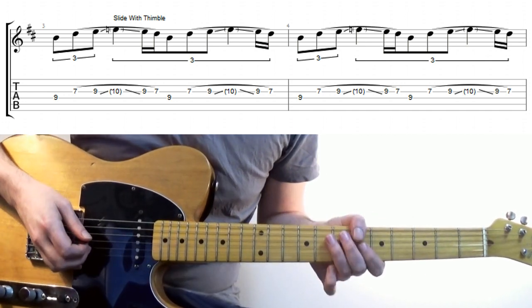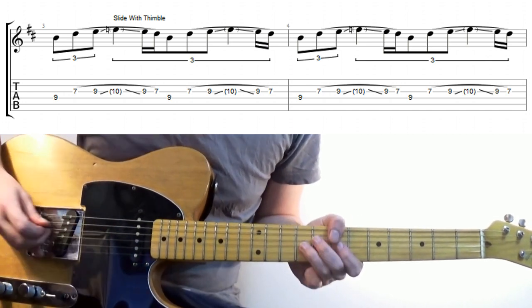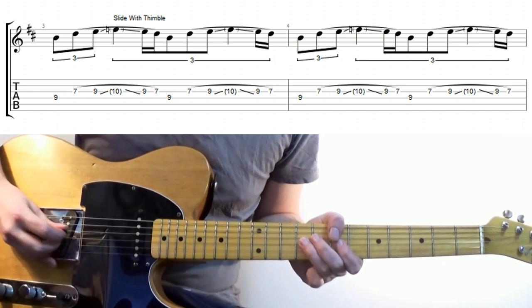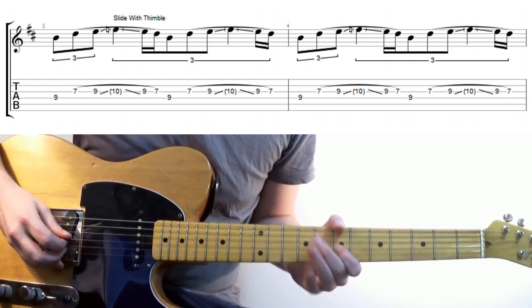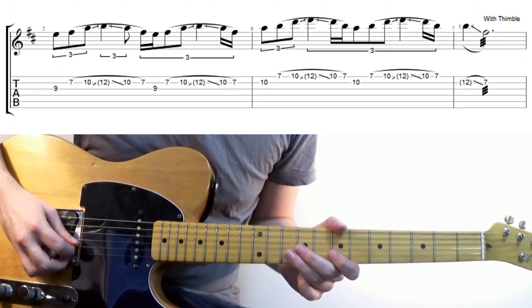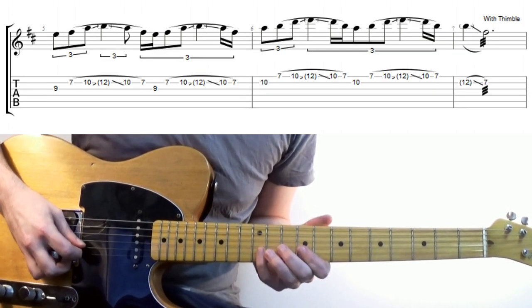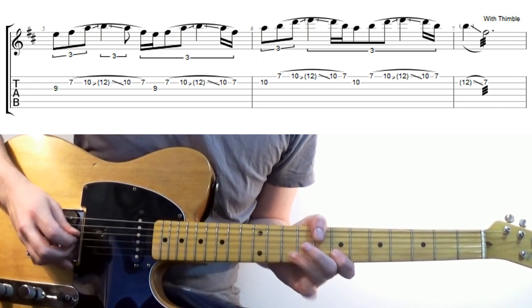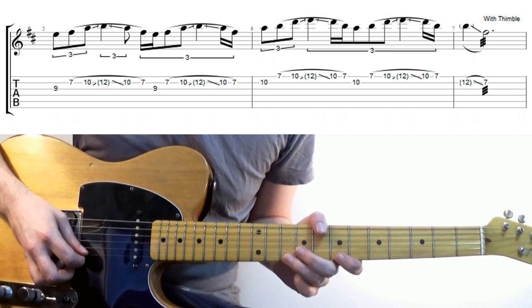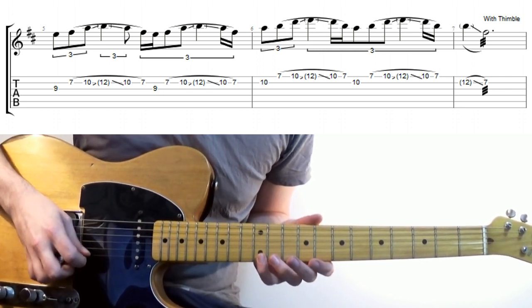Anyway, sliding the thimble towards the neck, what I'm doing is bending for the blues note, on the next string I'm putting the thimble somewhere between this note and this one, and then on the E string I'm kind of going maybe just slightly flat version of the E.